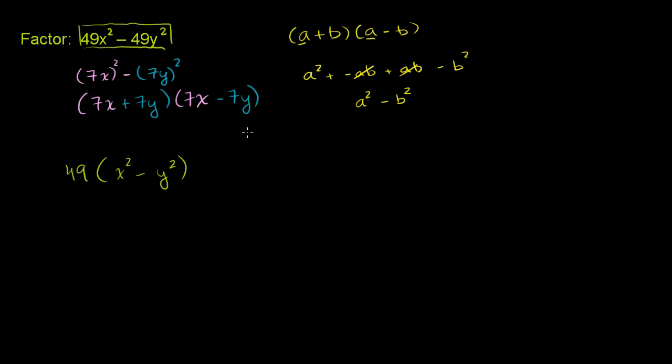And you say, oh, this fits the pattern of a squared minus b squared. So this will be x plus y times x minus y. So the whole thing would be 49 times x plus y times x minus y. And to see that this right here is the exact same thing as this right over here,